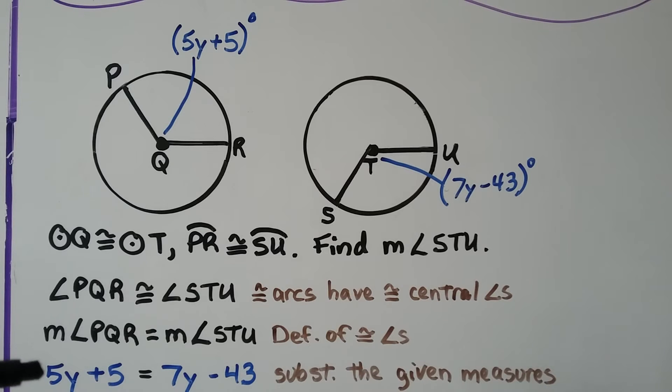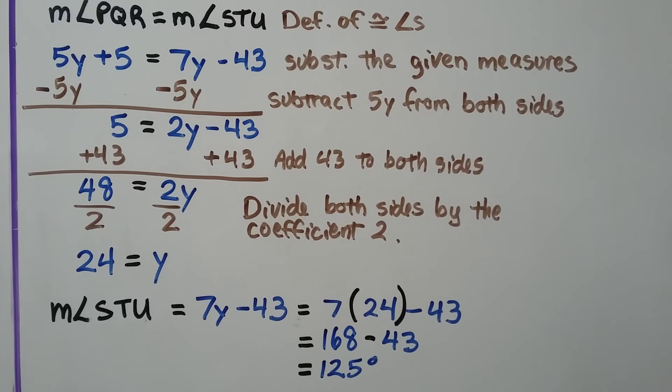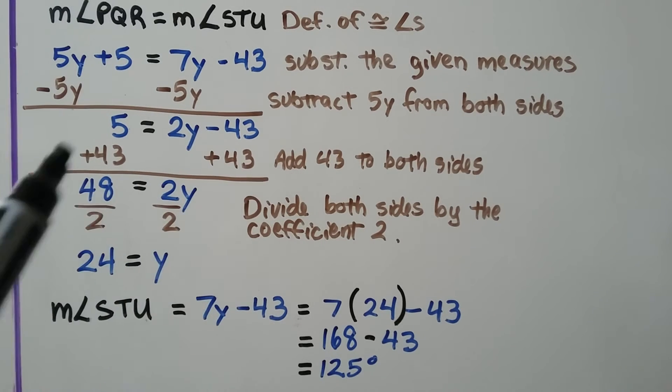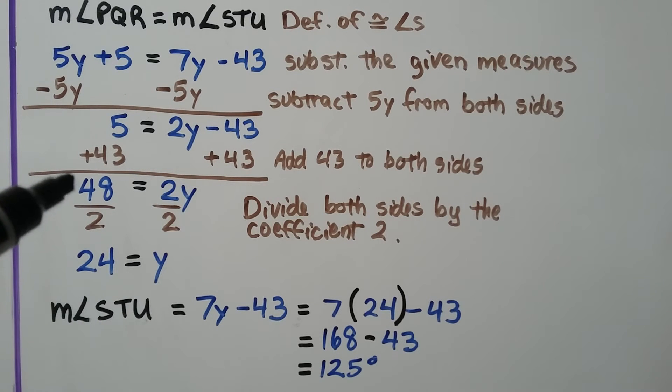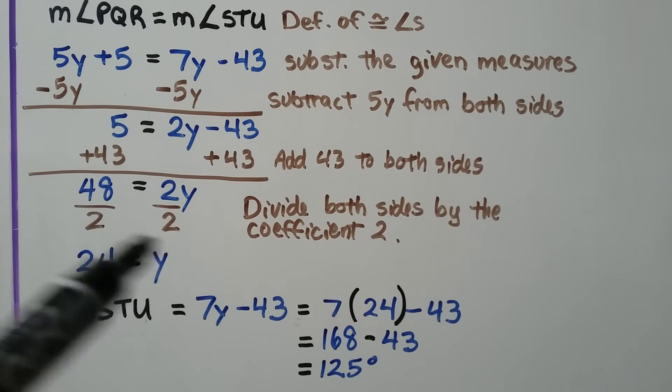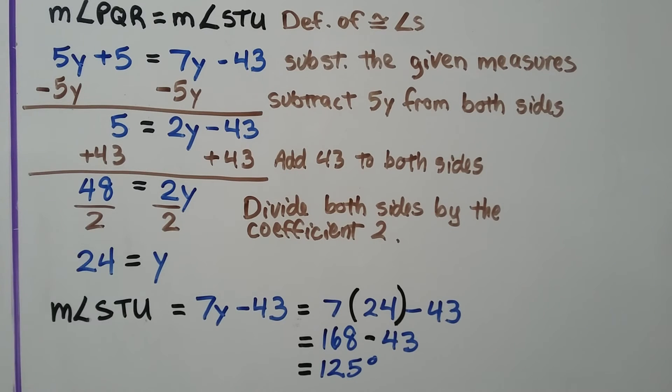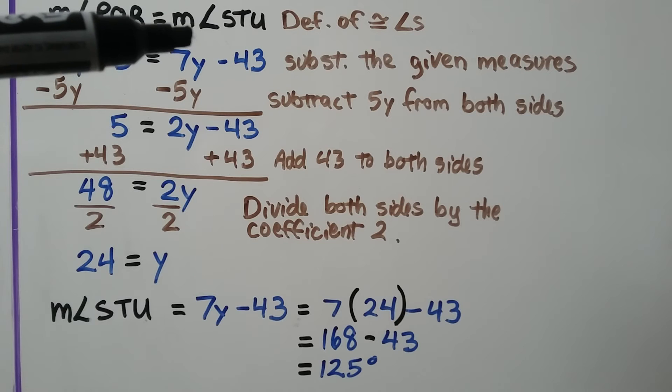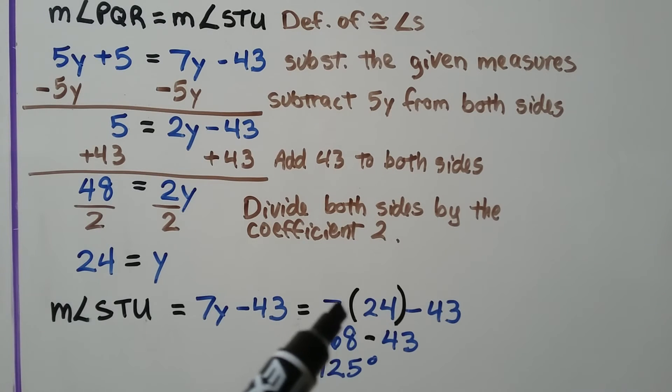We substitute in the given values, and we have 5y plus 5 is equal to 7y minus 43. We subtract 5y from both sides, and we're left with 5 is equal to 2y minus 43. We add 43 to both sides, and we get 48 is equal to 2y. We divide both sides by the coefficient 2, and we get that 24 is equal to y, or y is equal to 24. Now, we were looking for 7y minus 43. So we put in 24 for y. We get 7 times 24 minus 43. That's 168 minus 43.